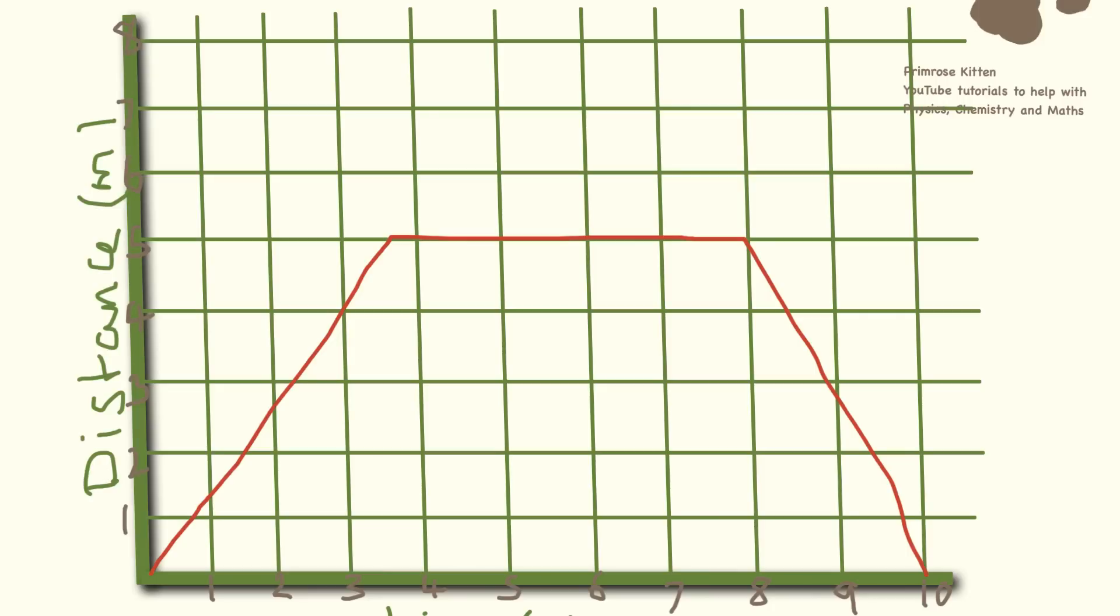This one, again, the first bit steadily increasing, we are going at a steady speed. The middle bit, we are stationary, and then for the last bit, we are decelerating. And it is this type of graph you are going to be expected to do some maths on.